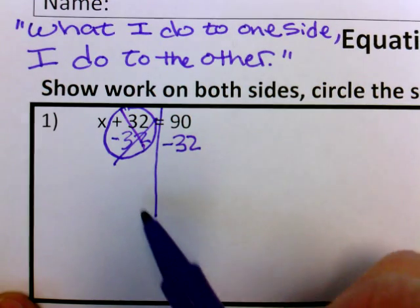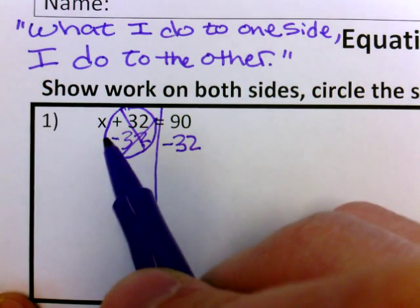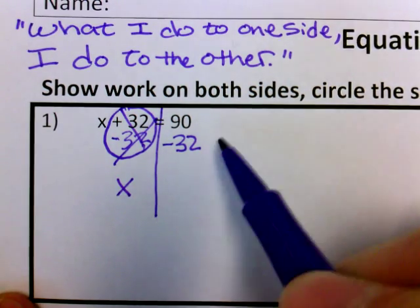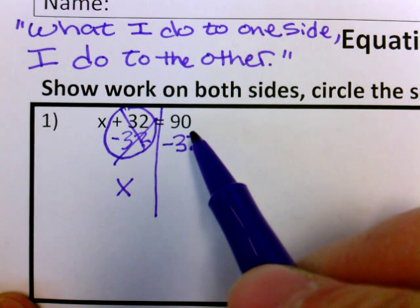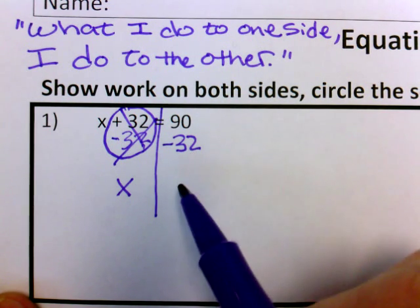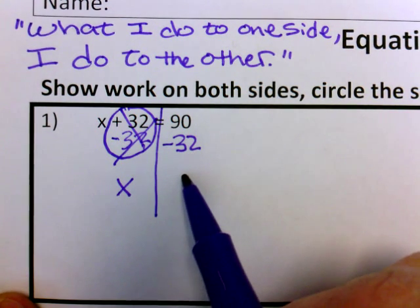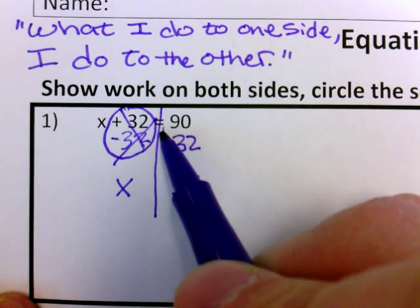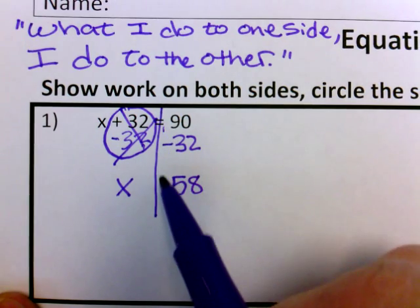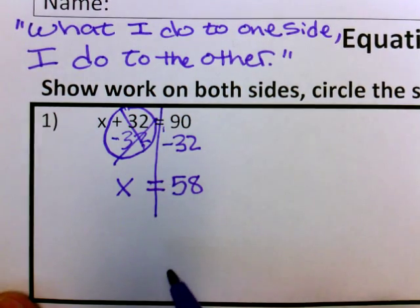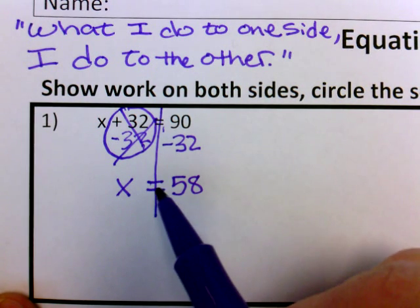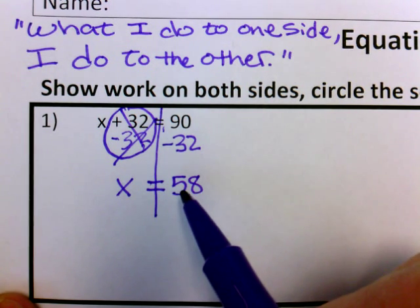They become zero. So I don't have anything over here besides just an x, which was our goal. Over here, 90 minus 32 is 58. My equal sign comes straight down. So my answer for this problem is x equals 58.